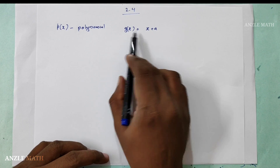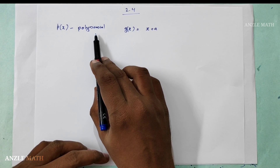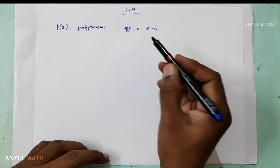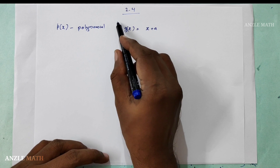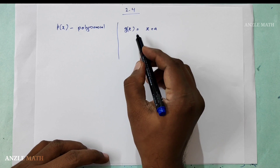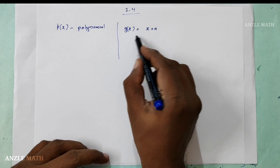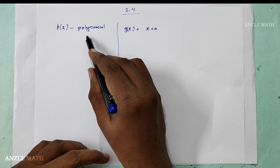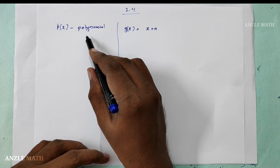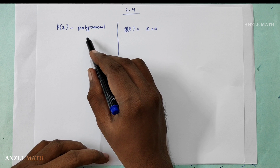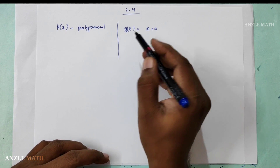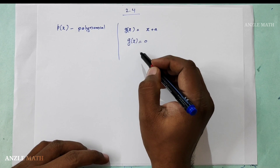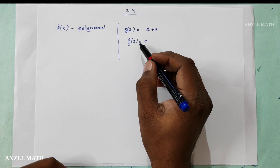We will check one function, where the function is the factor and value. We will check g of x and p of x — where g of x is the factor and p of x is the value. We will check that in the next step. We will check one example.